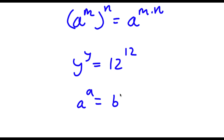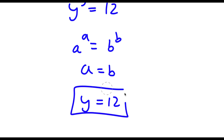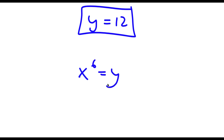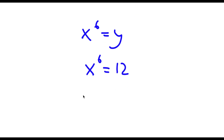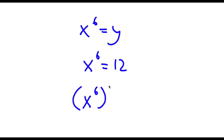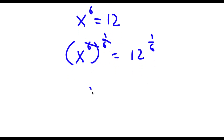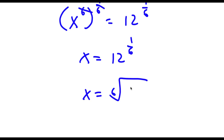Now if I have a to the power of a is equal to b to the power of b, this means a is equal to b. So in this case y is equal to 12. Remember we set x to the power of 6 equal to y, so x to the power of 6 is equal to 12. Taking the power of 1/6 on both sides, 6 and 1/6 cancel out, leaving x is equal to 12 to the power of 1/6, which is the same as the sixth root of 12. So this is my answer.